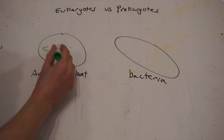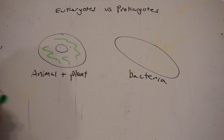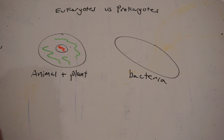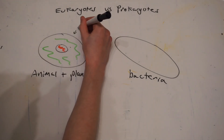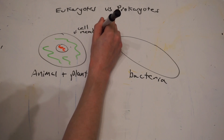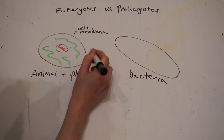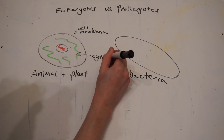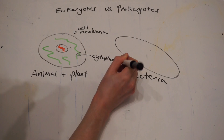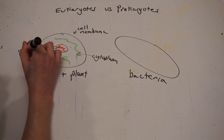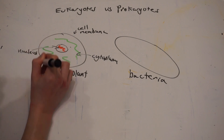Most animal cells have the following subcellular structures. This includes the nucleus, which contains the genetic information that controls the activity of the cell and is bound within its own membrane. The cytoplasm, which is a jelly-like substance where chemical reactions happen and it also contains enzymes which facilitate these chemical reactions, found outside of the nucleus but within the cell membrane. And then you also have the cell membrane which holds the cell together and controls what goes in and out of the cell.